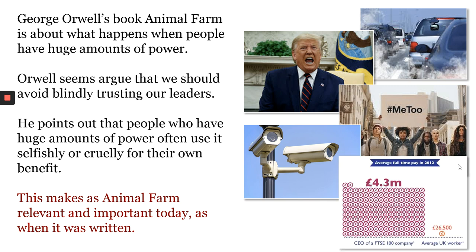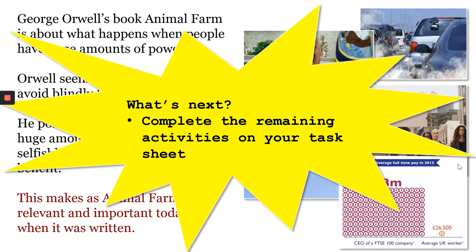And we also still live in a world of huge inequality, arguably more so than in the time of Tsar Nicholas and the Russian Revolution. This all means that Animal Farm is as relevant and important to readers today as when it was written, because there are always going to be people with more power than others. And whether we're the ruler or the ruled, we need to think about how people are using power and whose benefit they use it for. What you need to do now is go back to your task sheet attached to the homework and complete the remaining activities. Thank you very much.